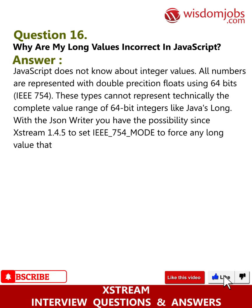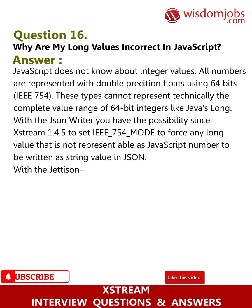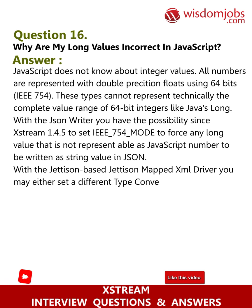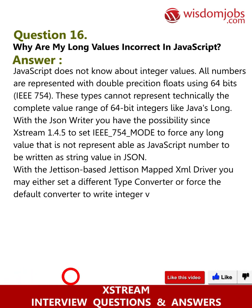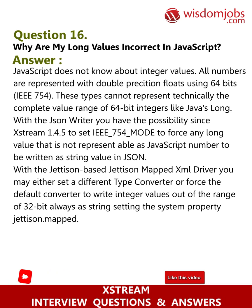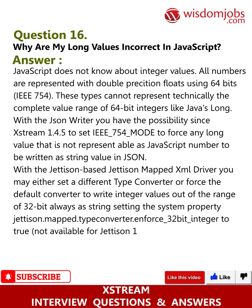...any long value that is not representable as a JavaScript number to be written as a string value in JSON. With the Jettison-based JettisonMappedXmlDriver, you may either set a different type converter or force the default converter to write integer values out of the range of 32-bit always as string, by setting the system property jettison.mapped.typeconverter.enforce_32bit_integer to true. Not available for Jettison 1.0.1 and Java 1.4.